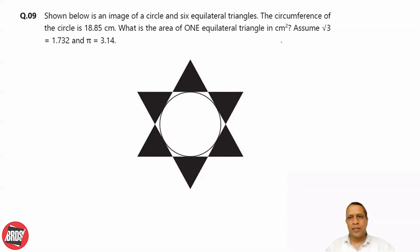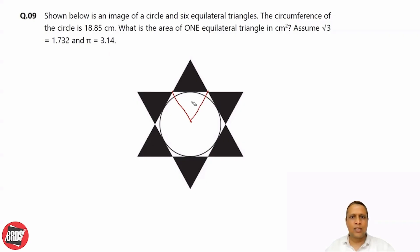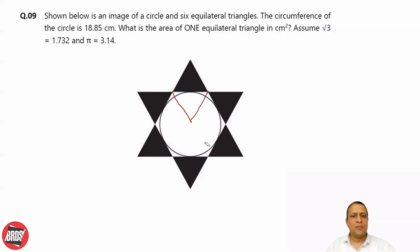The circumference of the circle is 18.85. If you connect them like this, this equilateral triangle and this equilateral triangle are both congruent — they are the same. And circumference of this circle is 18.85.